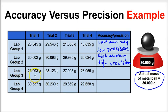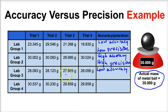Lab group three measured the ball four times: 28.093, 28.123, 27.995, and 28.056 grams. Looking at their accuracy, these measurements are a little bit away from the true mass of 30.000 grams, so we say they have low accuracy. However, looking at precision, the measurements are pretty close to one another — 28.093, 28.123, 28.056, and 27.995 — so we say they have high precision. Lab group three has low accuracy and high precision.